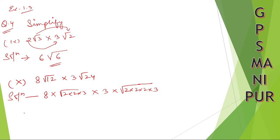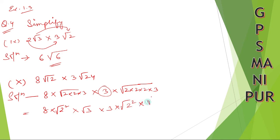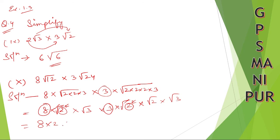Now, so 8 into 2 into 2 into 2 — so 2 squared — into 3. Now let me take all the whole number parts: that is 8, 3, and this 2 and this 2 also. So 8 into 2 into 3 into 2, and let me take all the root portion.